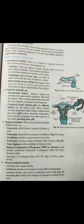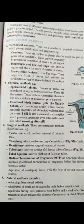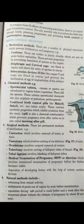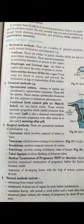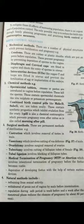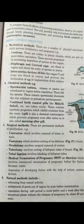Surgical methods include castration, which is the surgical removal of ovaries, and vasectomy, which involves cutting the vas deferens in males. Tubectomy involves cutting or tying the fallopian tubes in females, also called tubal ligation. Another surgical option is the medical termination of pregnancy, or abortion.